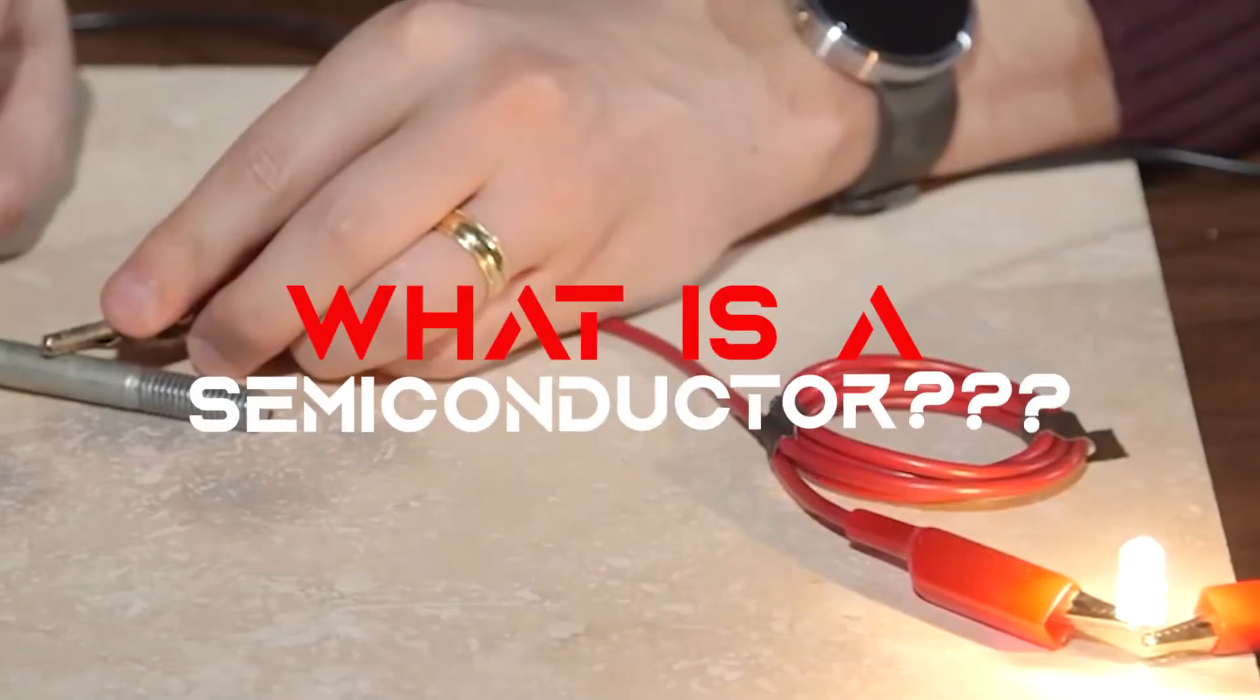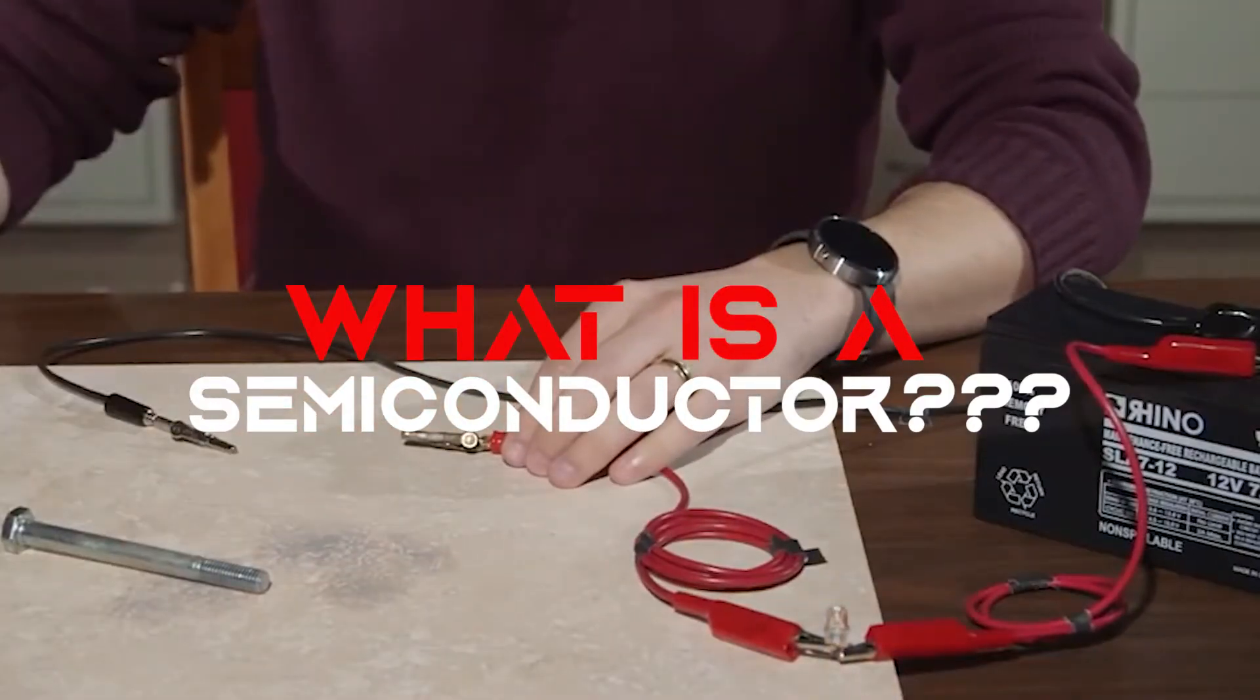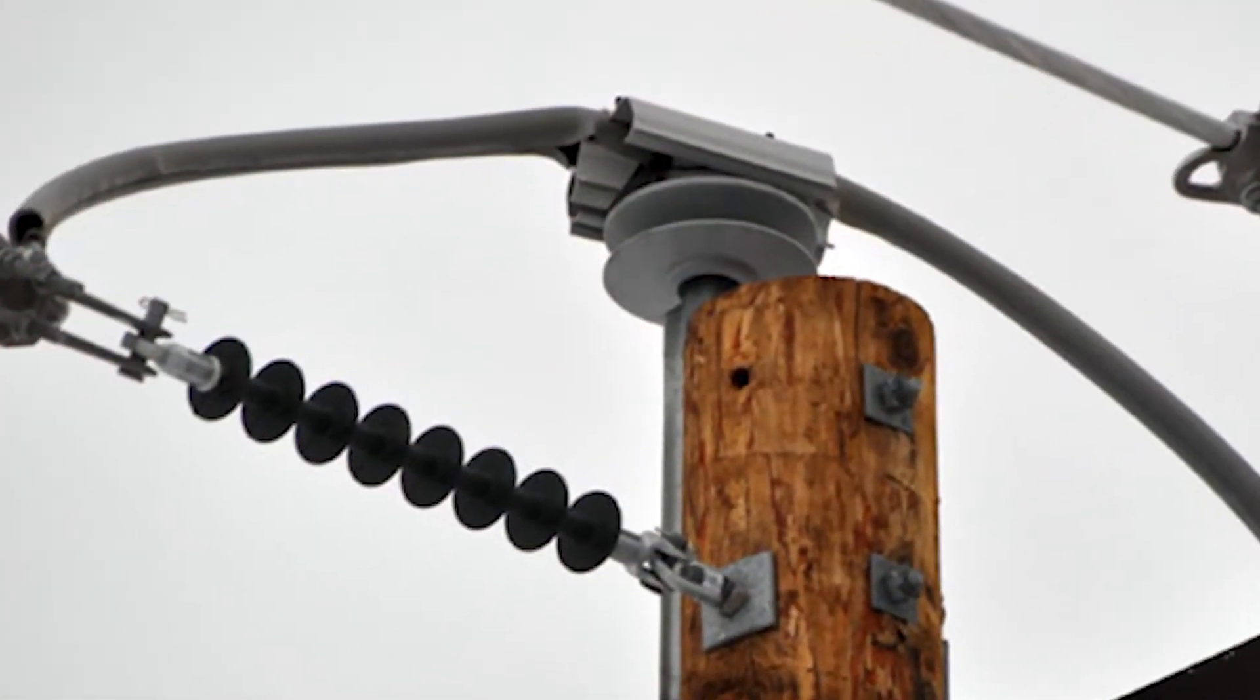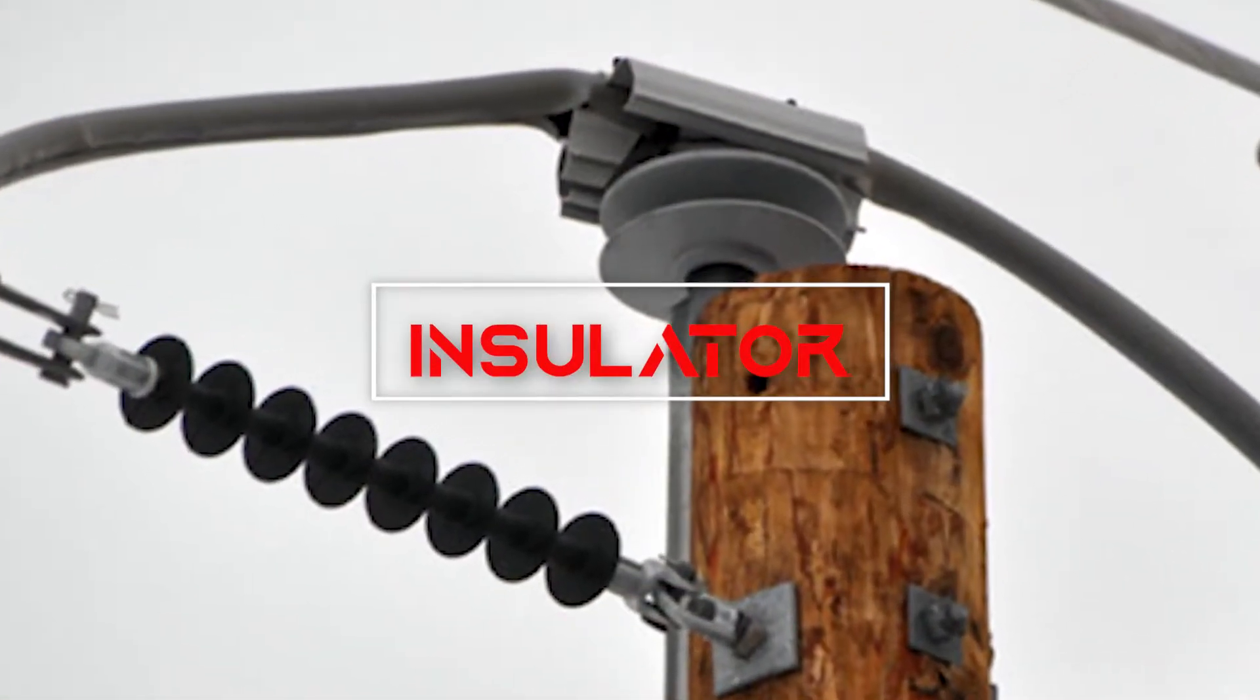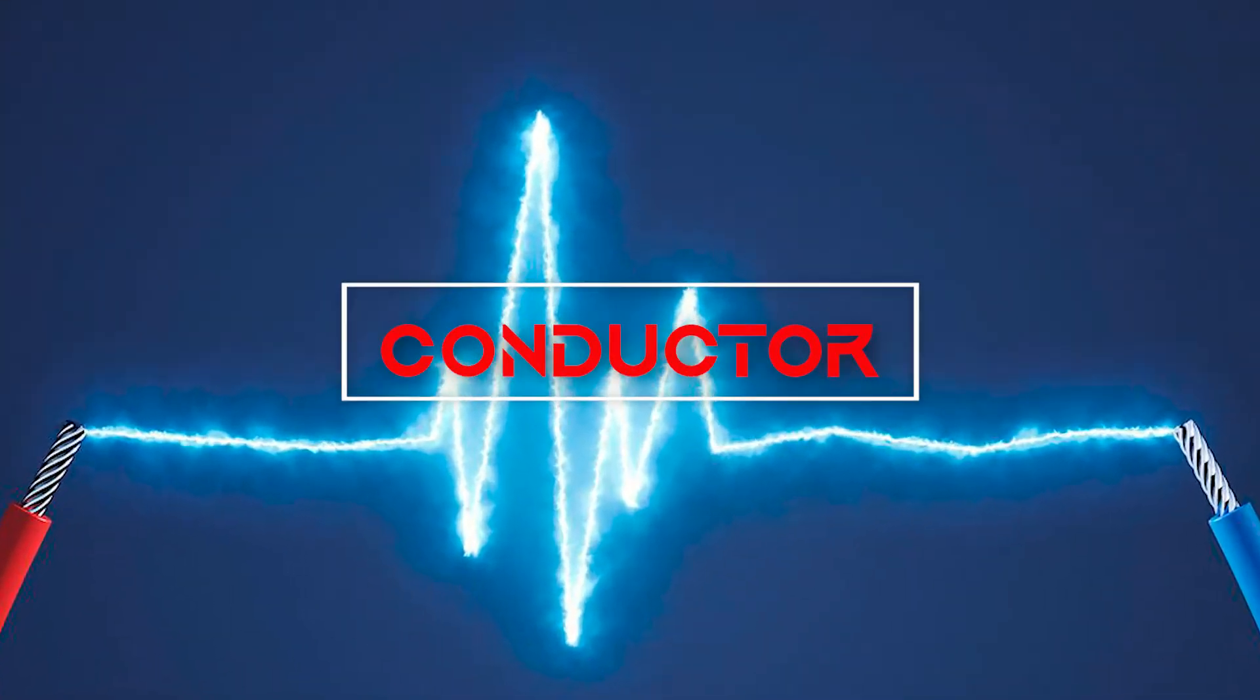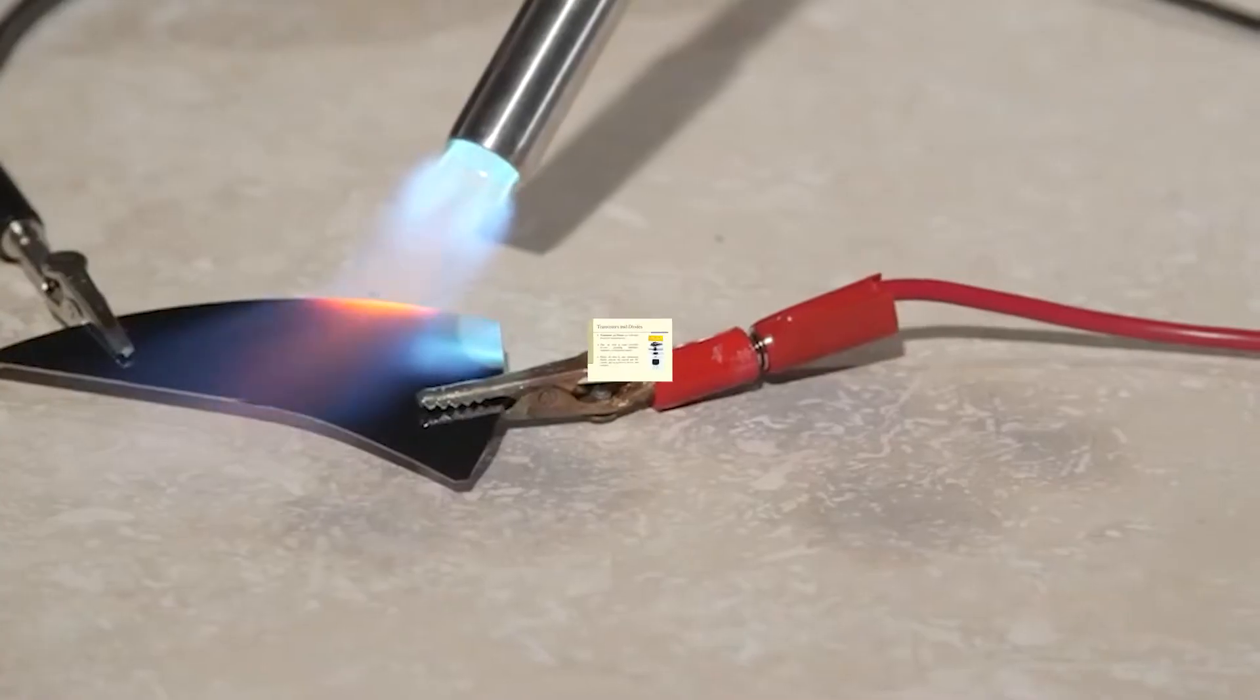What is a semiconductor? First things first, a semiconductor possesses very specific electrical properties. A substance that does not conduct energy is called an insulator and a substance that does conduct electricity is called a conductor. Semiconductors lie somewhere in between the two.